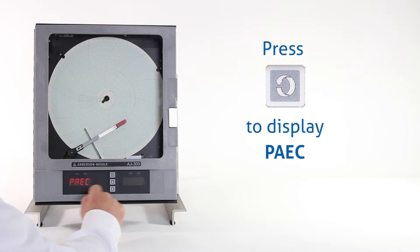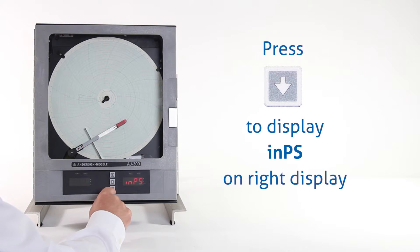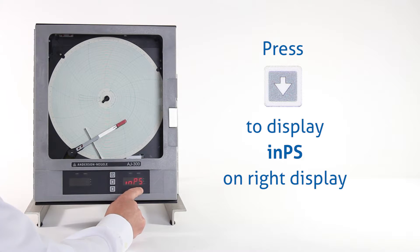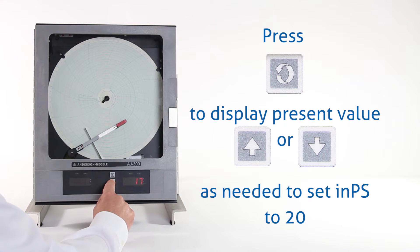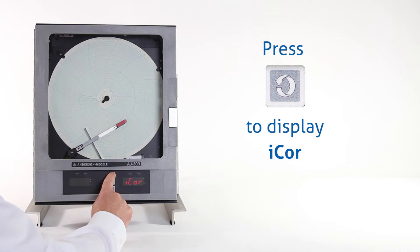We'll see PAEC on the left display. Now we use the down arrow key to get over to INPS on the right-hand display. Once we have INPS, we hit the scroll key, and again we want this number to be set to 20 for RTD input degrees C. We use our up arrow key to get to 20. Once that's at 20, we hit the scroll key one time and we have ICOR.